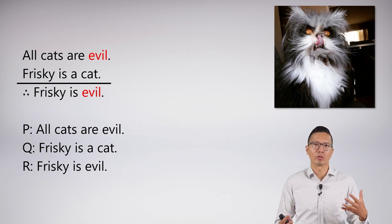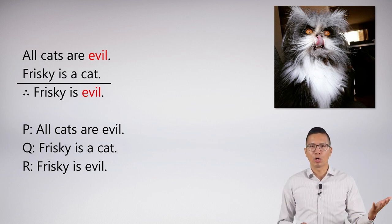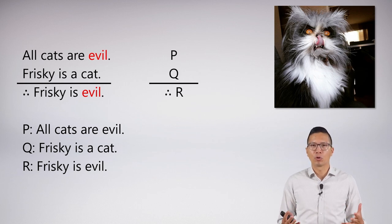But we have a problem with this argument. And the problem is that when we actually try and symbolize it using our sentential skills, we have some abbreviation scheme, like P, Q, and R as displayed here, and we just get a very straightforward argument. P, Q are our premises, therefore R is the conclusion.